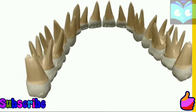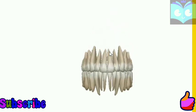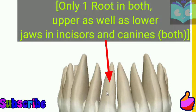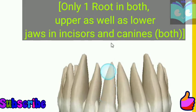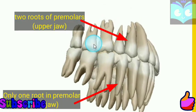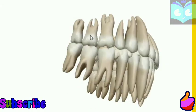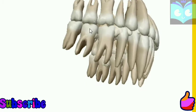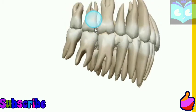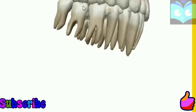Now let's talk about the roots of teeth. In humans, incisors and canines in both the upper and lower jaws have only one root. For premolars, they have two roots in the upper jaw and only one root in the lower jaw. Molars are more advanced — each molar has three roots in the upper jaw and two roots in the lower jaw.